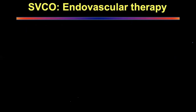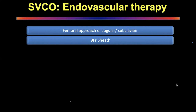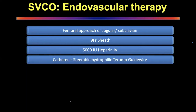For endovascular stenting of the SVC, you approach either through a femoral approach — most commonly — or via a jugular or subclavian approach. The femoral approach is preferred by most interventional radiologists. You use a 9 French sheath. Always give 5,000 international units of heparin intravenously. The catheter used is a steerable hydrophilic Terumo guidewire — a very soft tip that allows you to manipulate the guidewire through tight obstructions without causing a tear in the SVC.